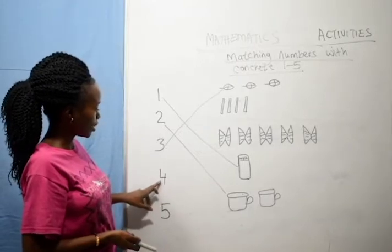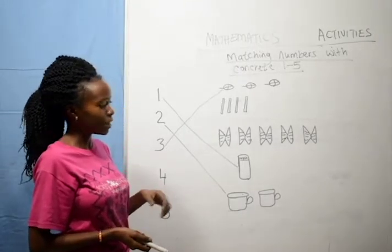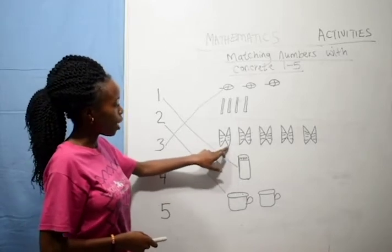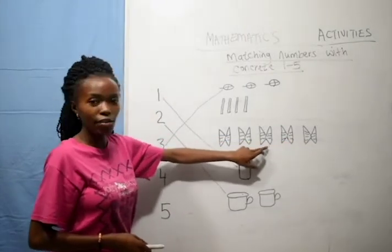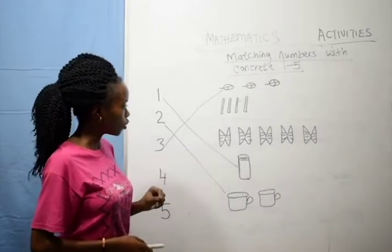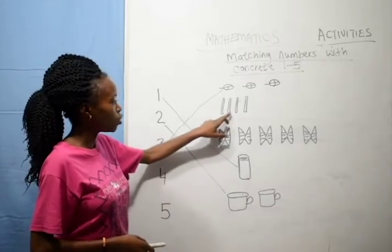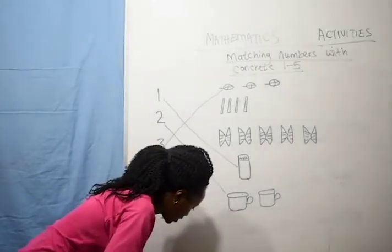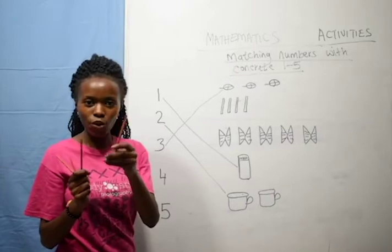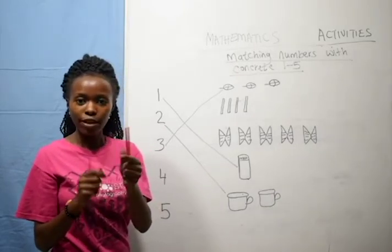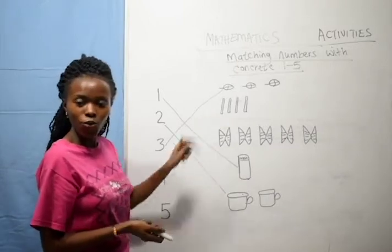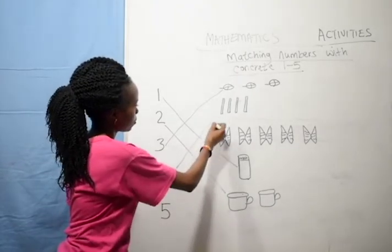So we go to number 4. This one is number 4. We are going to look for an object which has 4 items. Here I have 1, 2, 3, 4, 5 — I have 5 books. That means I cannot match number 4 with the 5 books. Here I have 4 sticks. Let's count: 1, 2, 3, 4. I have 4 sticks. So number 4 here, I am going to match with 4 sticks. Are we together? Very good, like that.